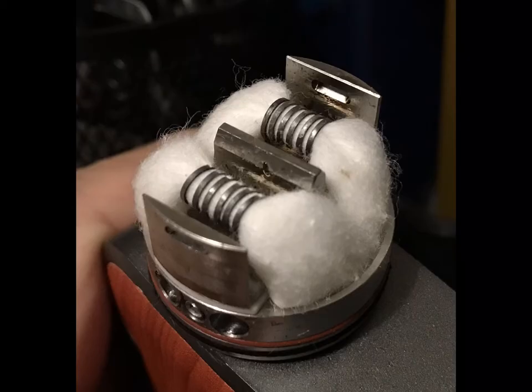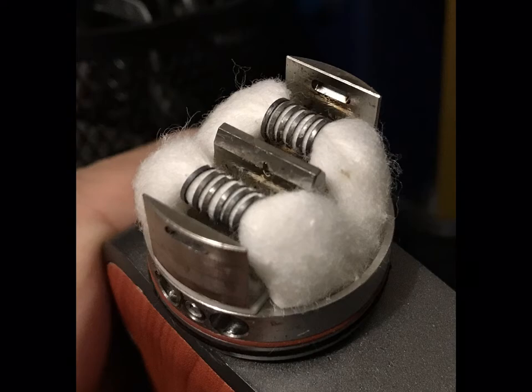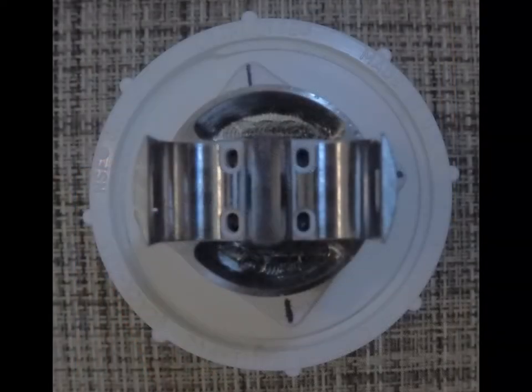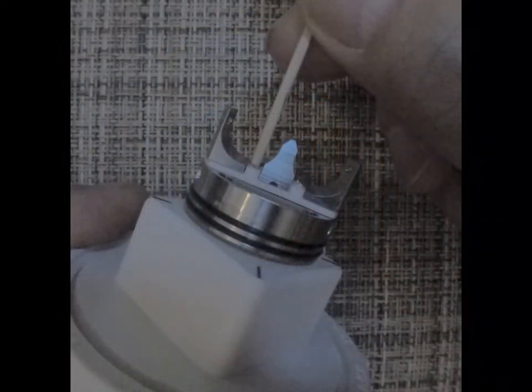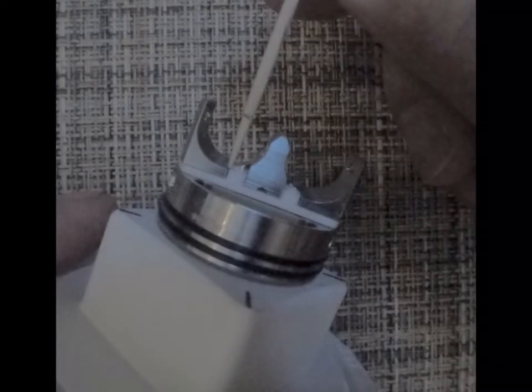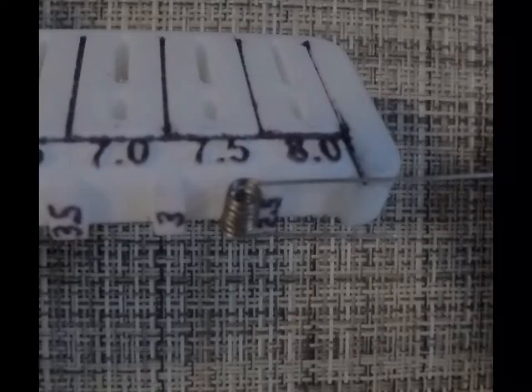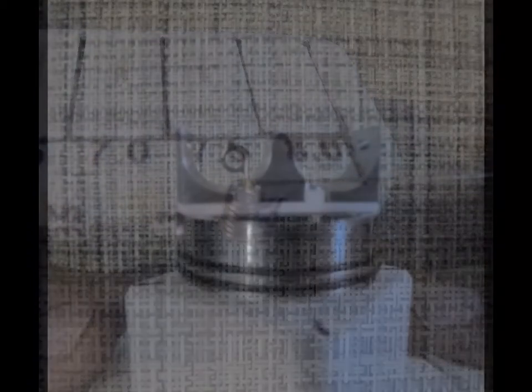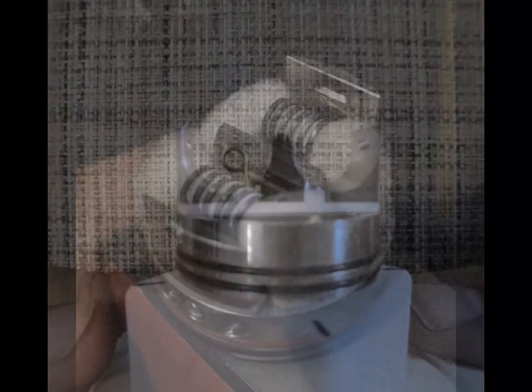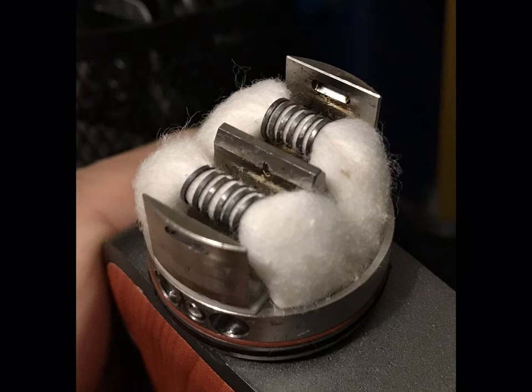Postless decks like the Cthulhu Zathog can also benefit from the use of the Coily. You just need to determine the depth of the holes for the coil legs before you proceed. Measure the depth, compensate for the amount of space you want off of the deck, cut your leads for the coil accordingly and drop them in. And don't forget, you can wick those coils before you put them in the deck, saving time and creating a prettier, neater looking build.